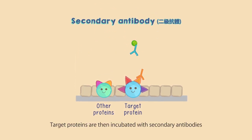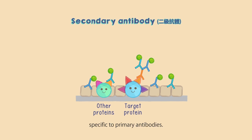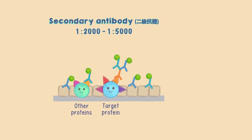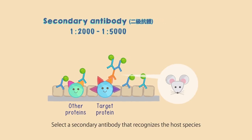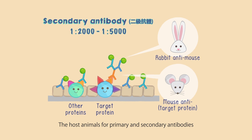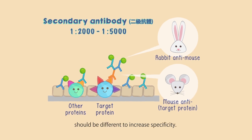Target proteins are then incubated with secondary antibodies specific to primary antibodies. The dilution for secondary antibodies is usually between 1 to 2,000 and 1 to 5,000. Select a secondary antibody that recognizes the host species used for producing the primary antibody.